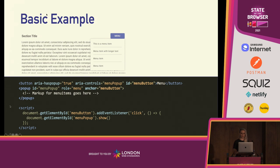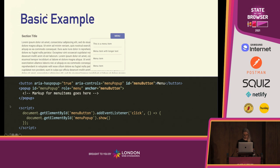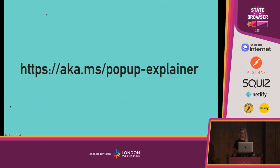In terms of the popup code, we'd use a button with an anchor attribute set to the button's ID, such as 'menu-button.' Currently popup menus are not visible until show is called by the author, so we do need some script here. For more information on popup, you can go to aka.ms/wack-popup-explainer.